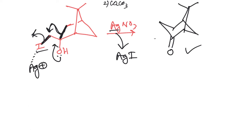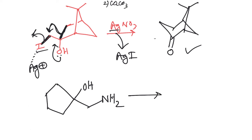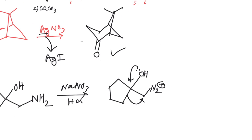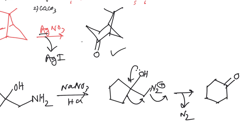The last example is a cyclopentane compound with an OH group and an NH2 group. On treatment with NaNO2/HCl — again a diazotizing condition — the NH2 forms N2+. The OH pushes electrons, the adjacent C–C bond migrates over to the carbocation center, and N2+ leaves as nitrogen gas. This gives a ring expansion product — from cyclopentane to a six-membered ring.